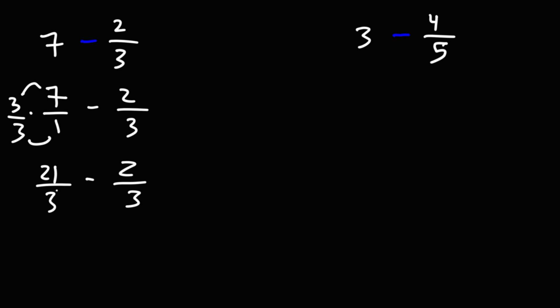So notice that I have the same denominator. Once that happens, we can now subtract the numerators of the two fractions. So 21 minus 2 is 19. Therefore, the answer as an improper fraction will be 19 over 3.